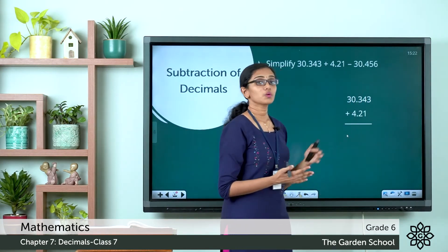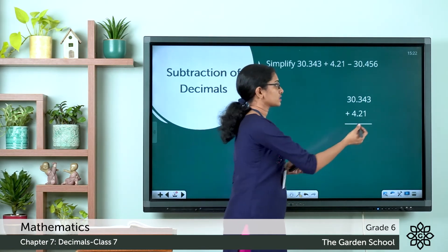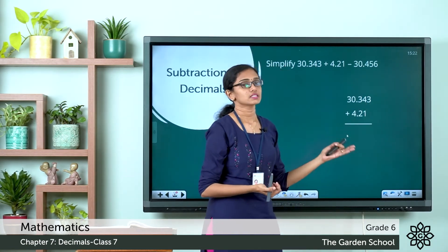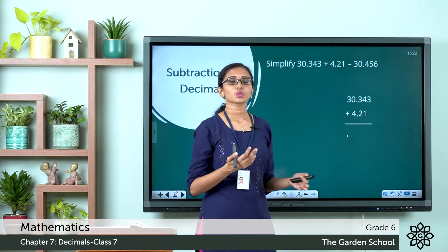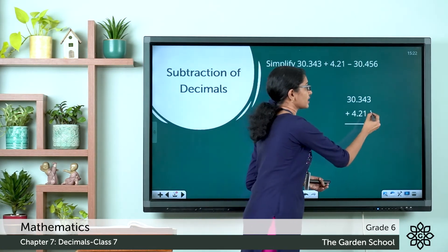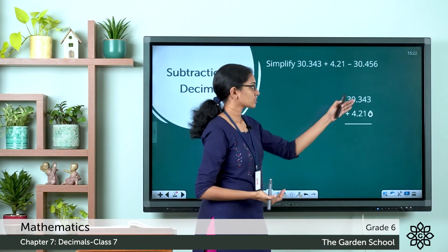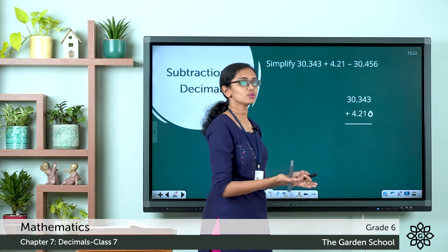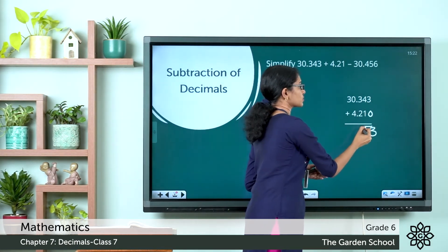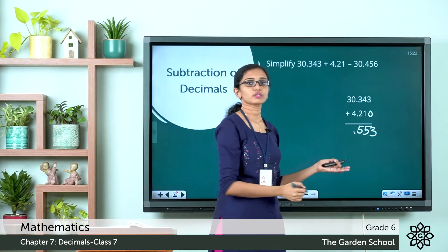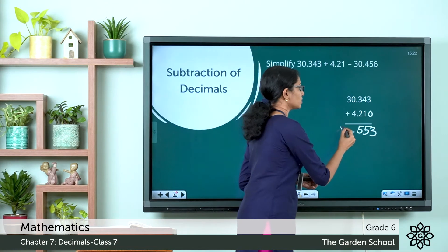Here we have the one thousandths place in the first number. This is three thousandths but there is no digit here in the second number. So we can insert a zero here to make the calculation easier. So this becomes 3 plus 0 which is equal to 3 itself. Now 4 plus 1, 5. 3 plus 2, 5 and coming to the whole number part, we have 30 plus 4 which is equal to 34.